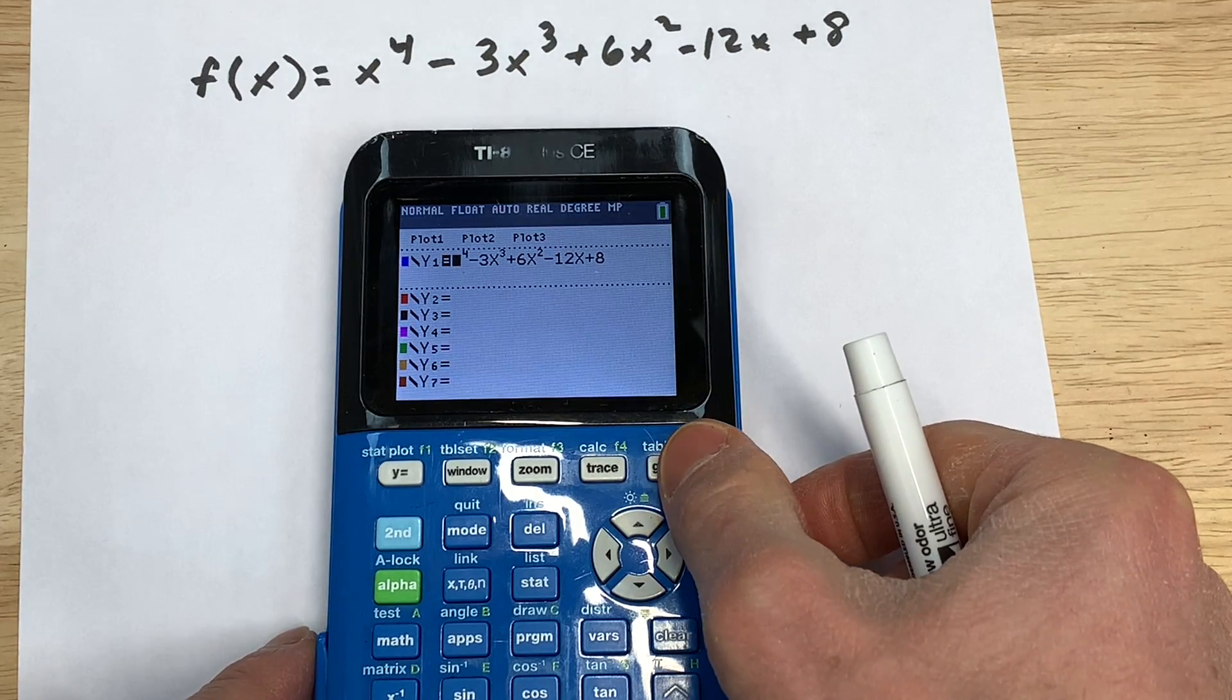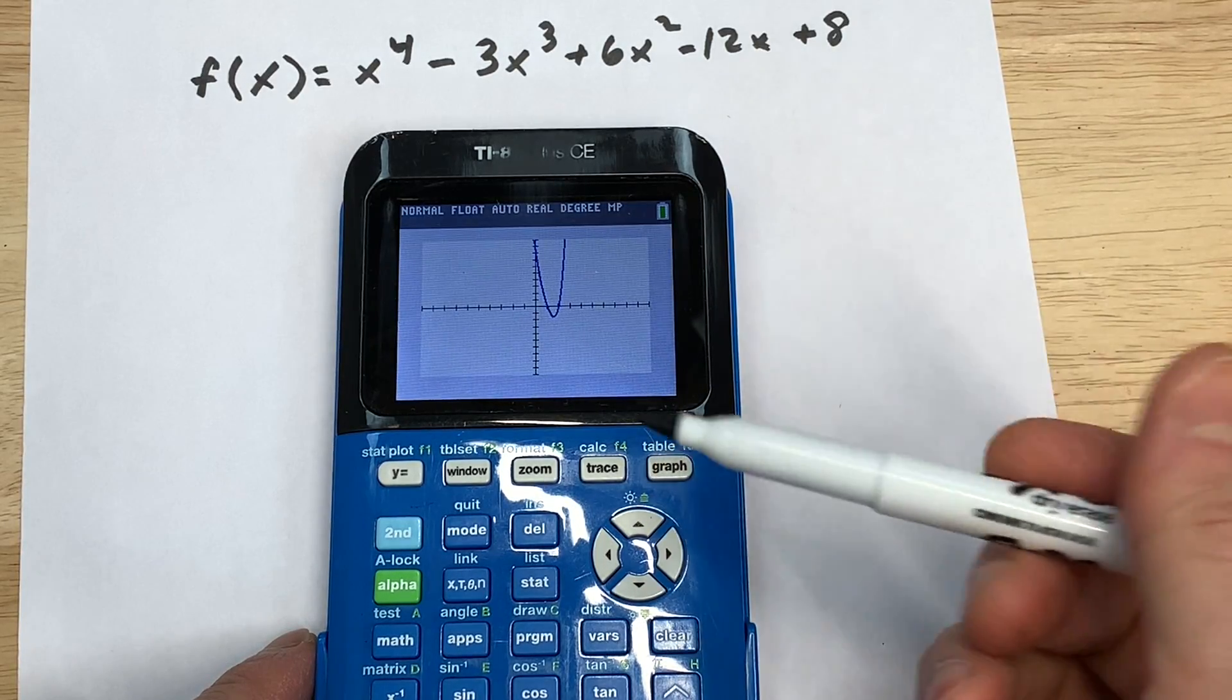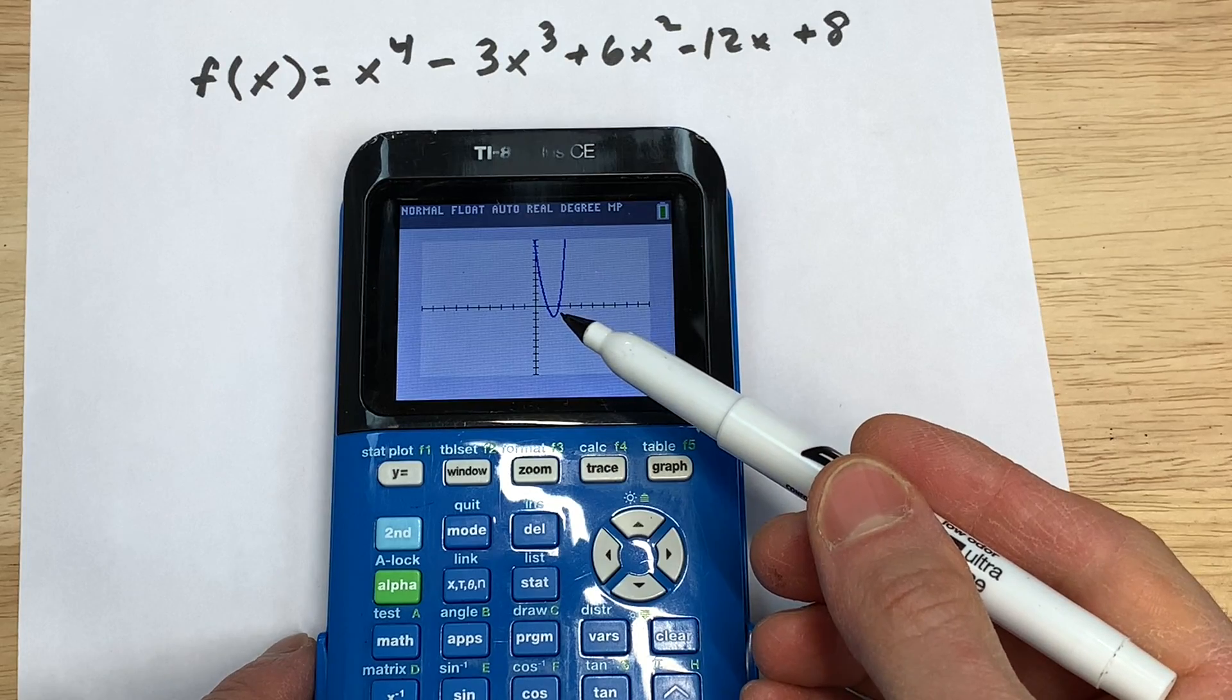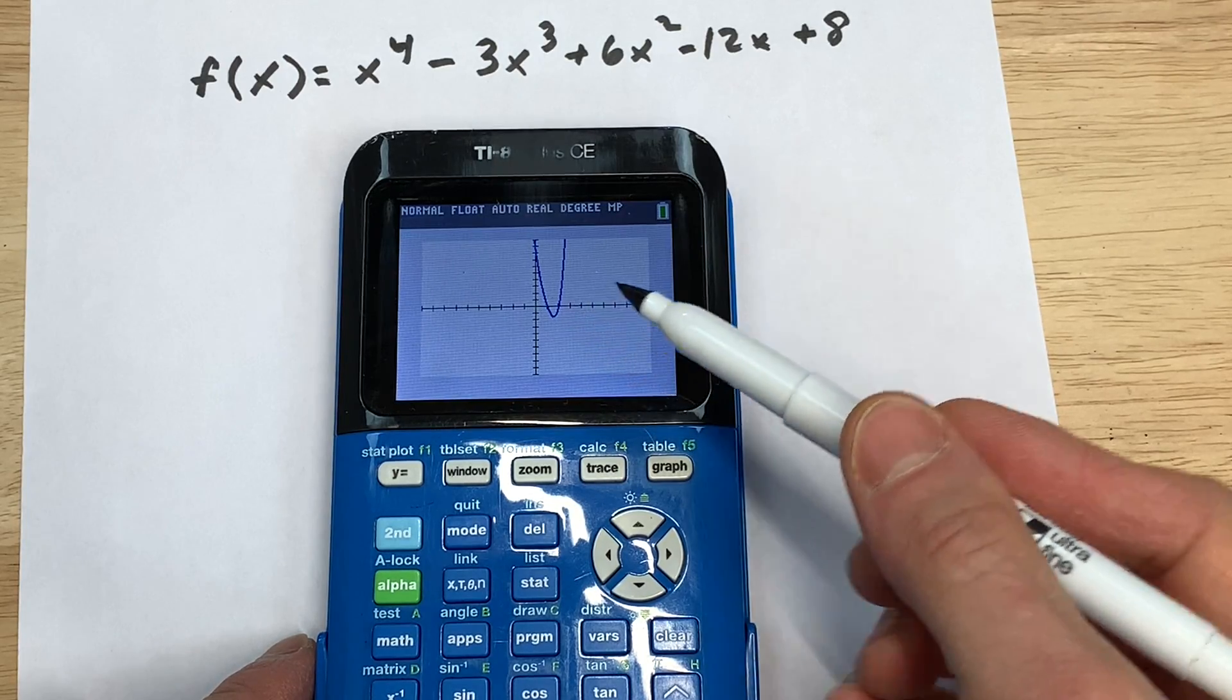So then what we're going to do is we're going to go over here to graph. And you can see that it's crossing the x-axis at 1 as well as at 2. So let's just make a note of that.